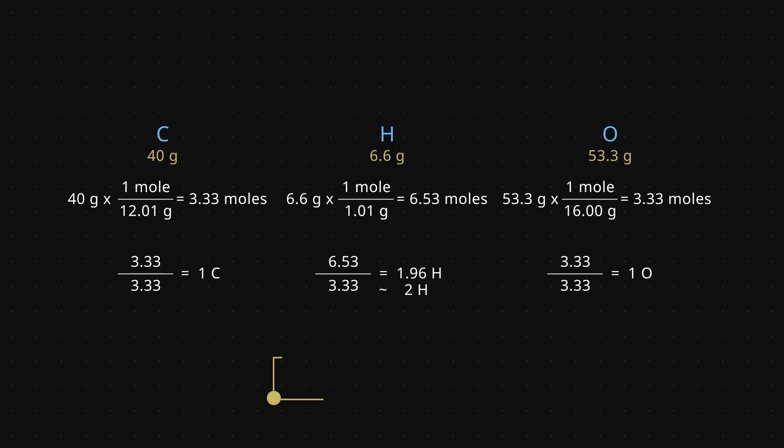That is, the empirical formula which gives the simplest whole number ratio of atoms is CH2O. Our molecular formula can be any multiple of this CH2O, double C2H4O2, or maybe even tripled, and so on.